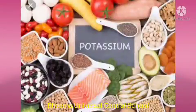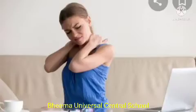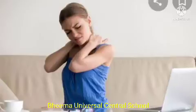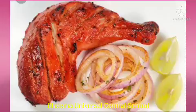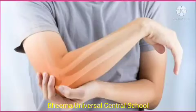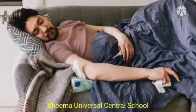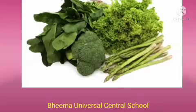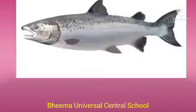Next minerals are sodium and potassium. Their function is to maintain body fluid balance. Deficiency causes weakness in the body and muscles. Symptoms are weakness and dehydration. Sources are salt and most foods. Next is magnesium. It regulates the functioning of muscles and nerves. Deficiency causes weakness of muscles and nerves. Symptoms are loss of appetite, sleepiness, and weak stomach. Sources are green leafy vegetables, cereals, meat, and fish.